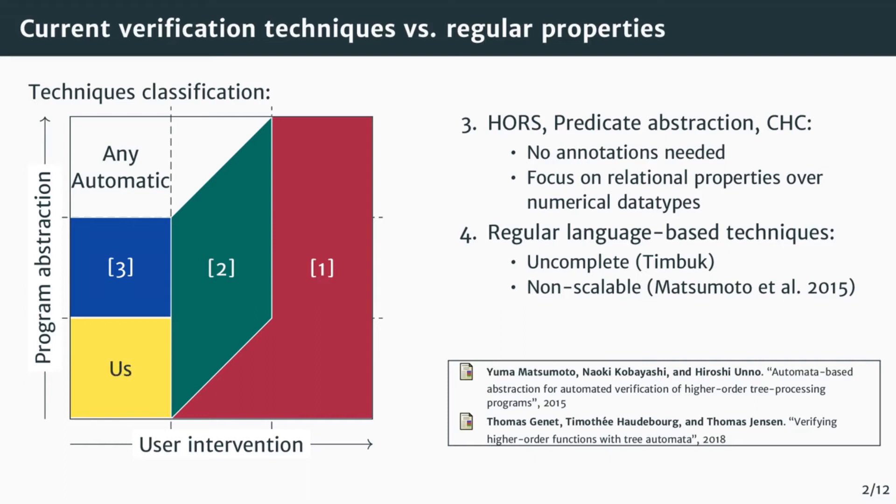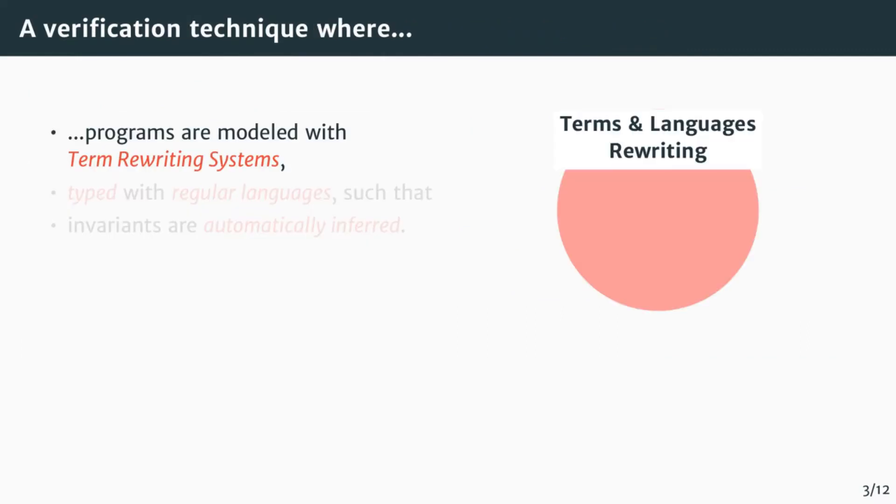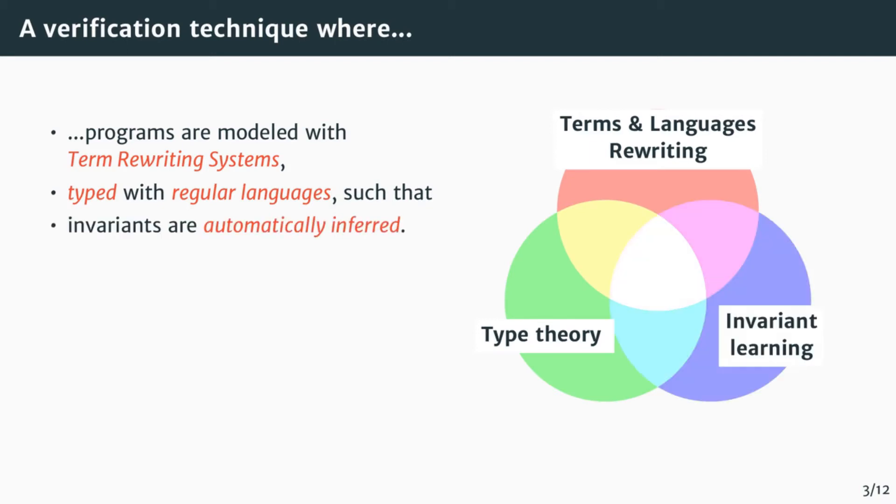In our paper, we propose a new technique that is complete on regular properties and modular to scale better. In our work, we use term rewriting systems to model programs and their semantics, and we use regular language of terms as types, which we are able to automatically infer using a regular invariant learning technique.